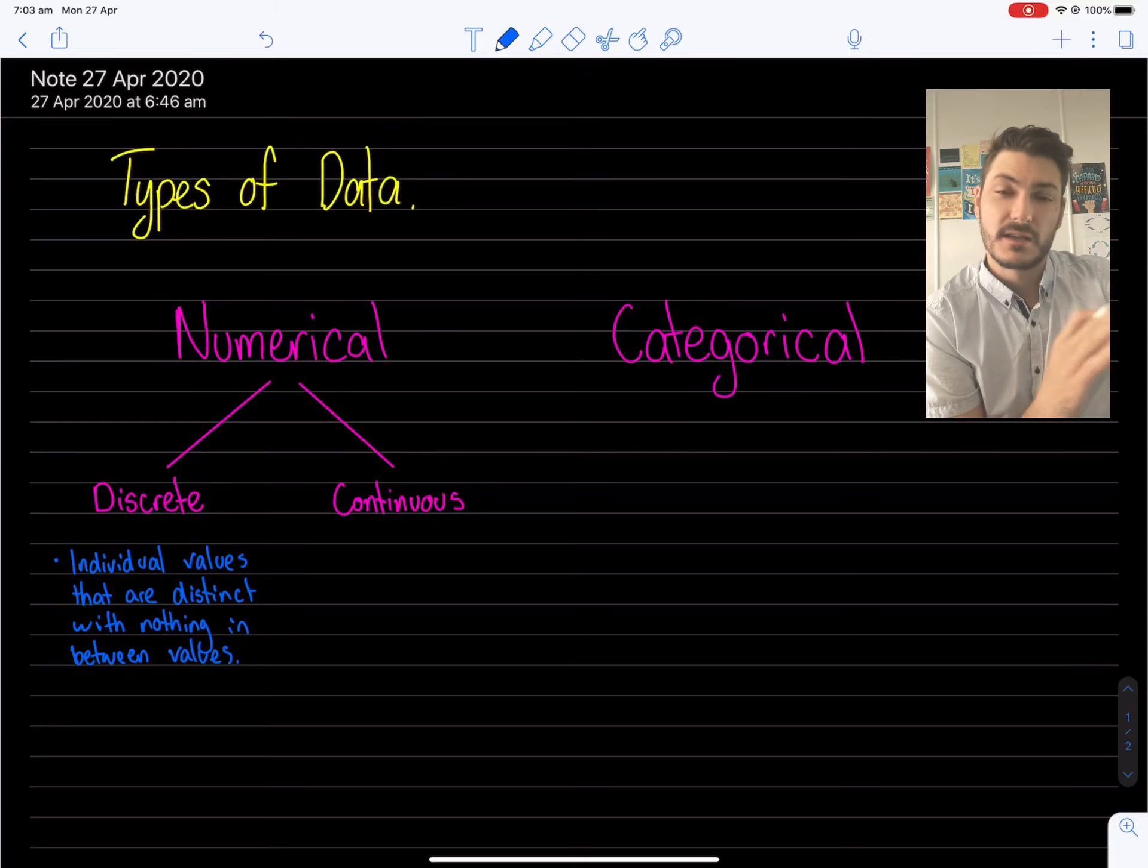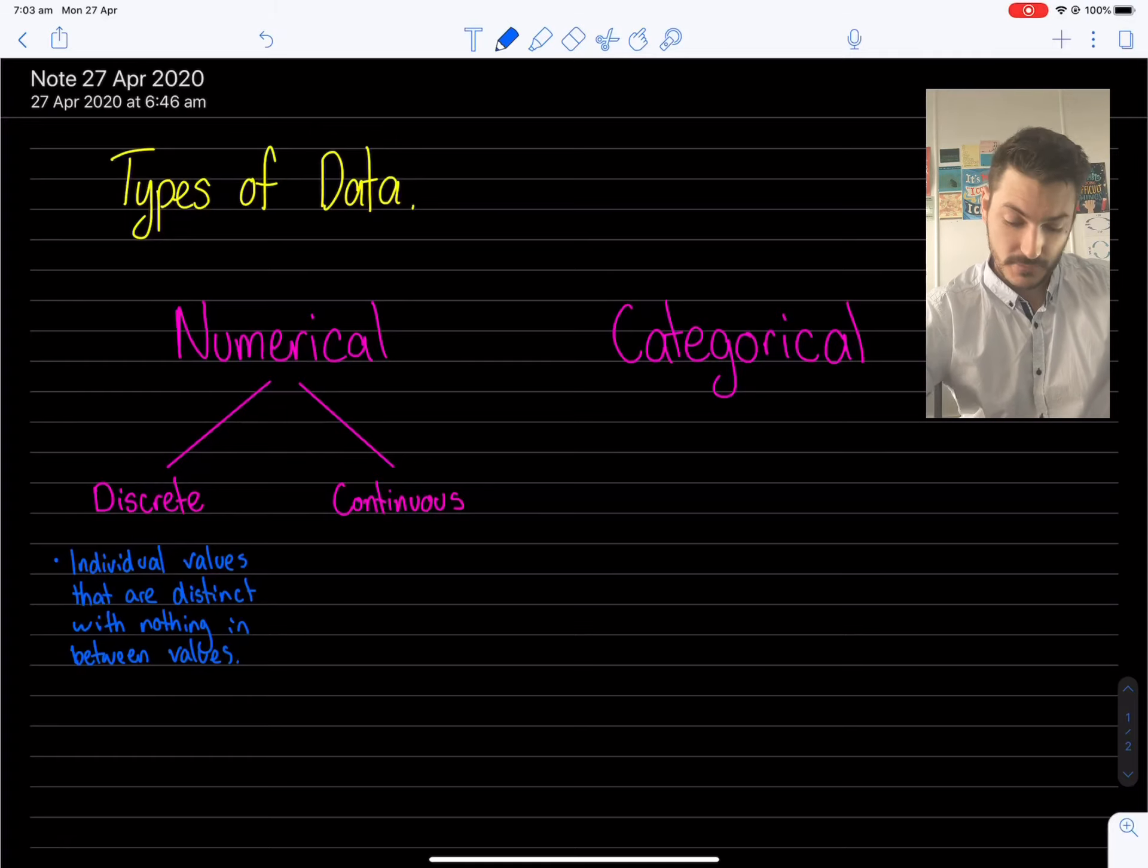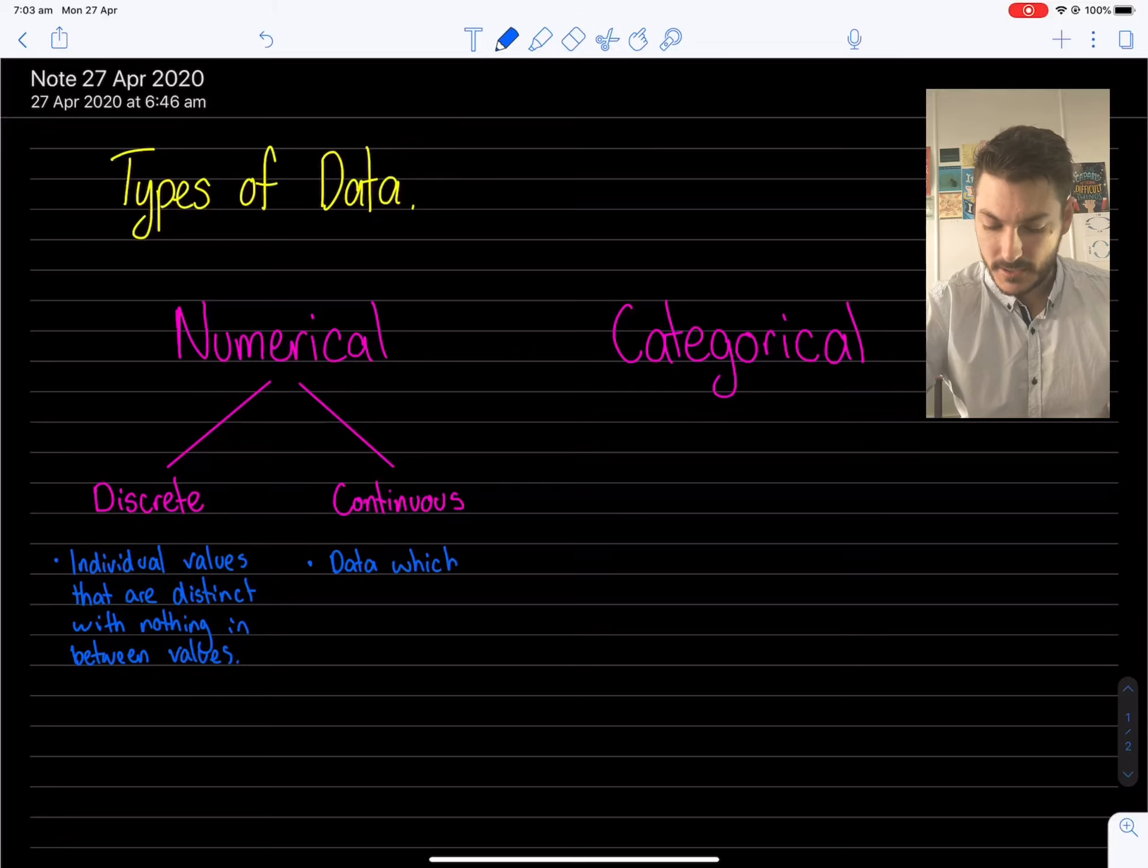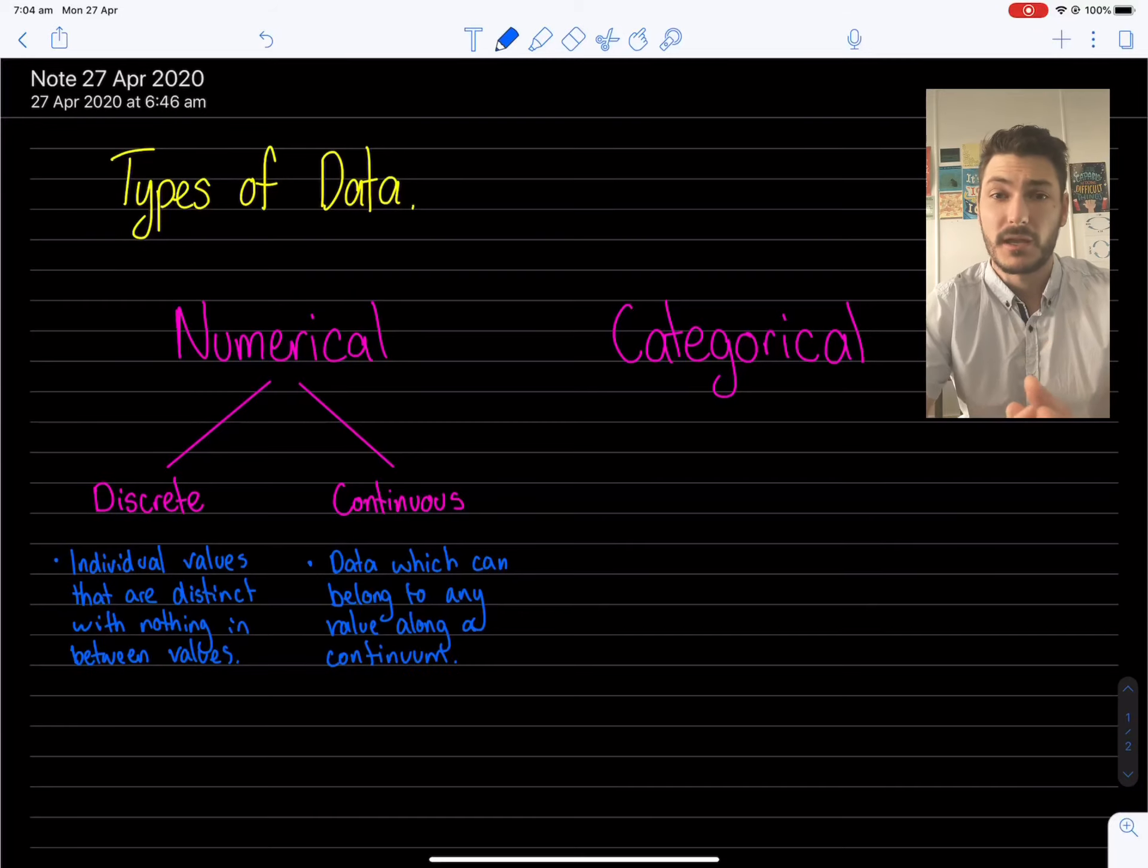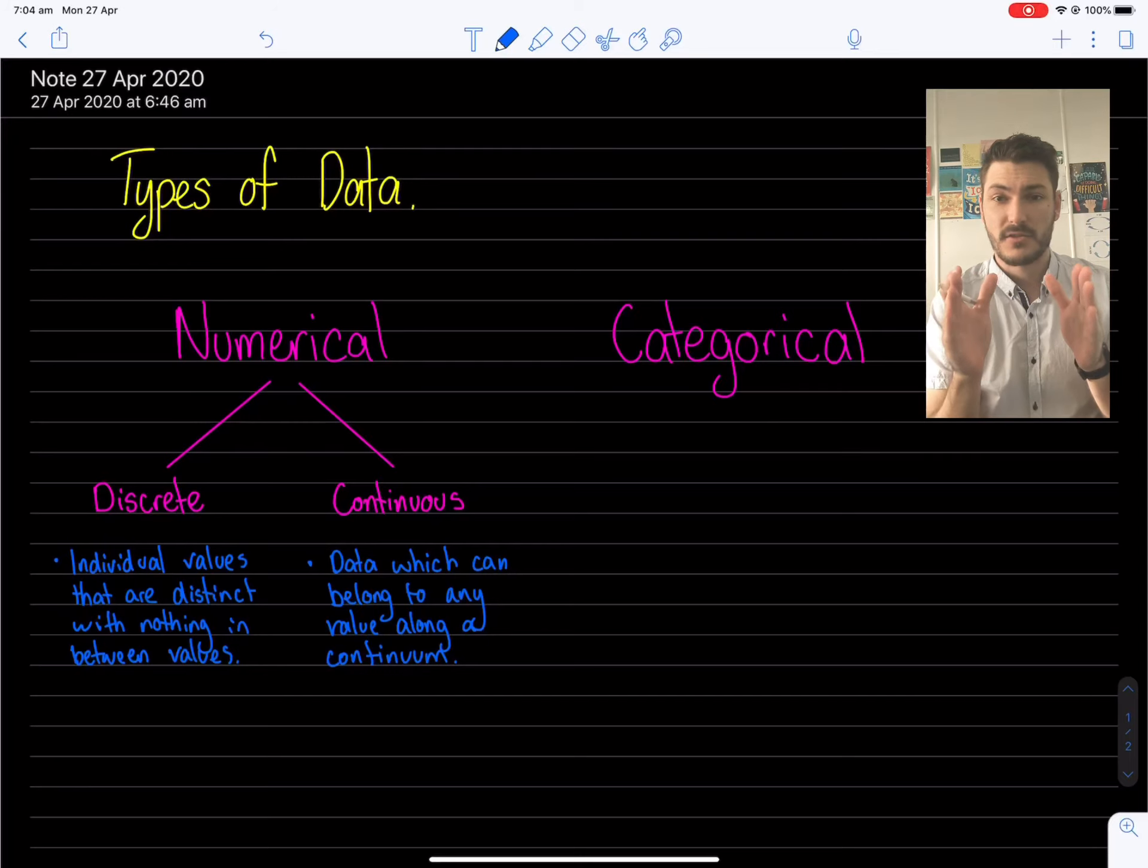But first I want to talk about continuous data as a definition. And this is going to be data which can belong to any value along a continuum. Meaning if you pick two data values, there is another data value in between. In fact, there's probably infinite data values because it's a sliding scale for continuous data. It's not like you're hopping from possibility to possibility. It's just a sliding list of possibilities.